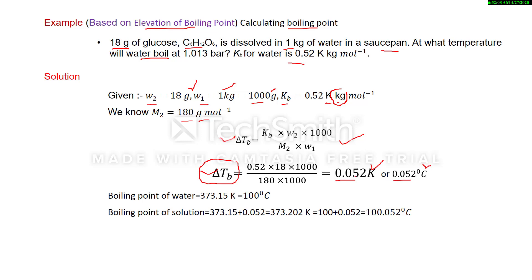The boiling point of water is 100°C, or converted to kelvin, 373.15 K. If we add the calculated delta Tb to 373.15 K, we get the result in kelvin; if we add it to 100°C, we get the result in degree Celsius.